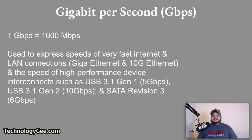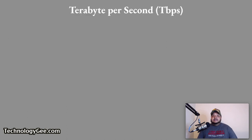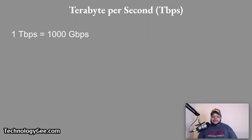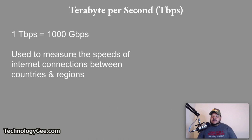One terabit per second equals 1,000 gigabits per second. Terabits per second are primarily used to measure the speeds of internet connections between countries and regions.